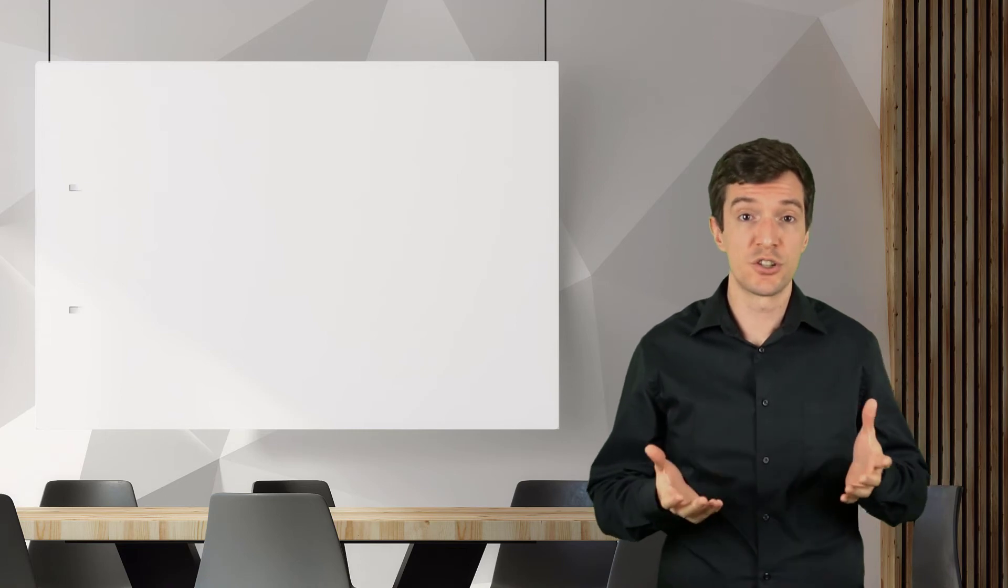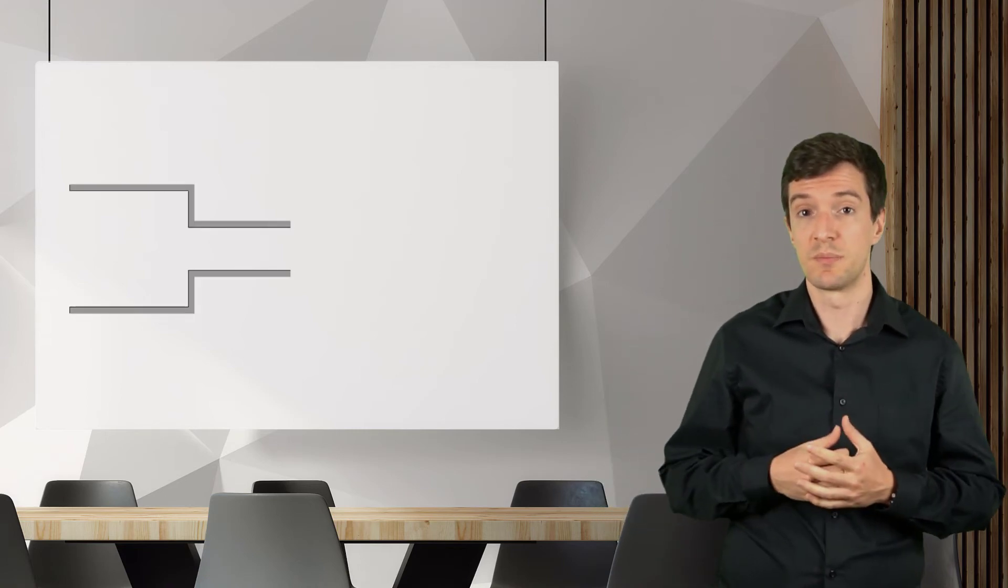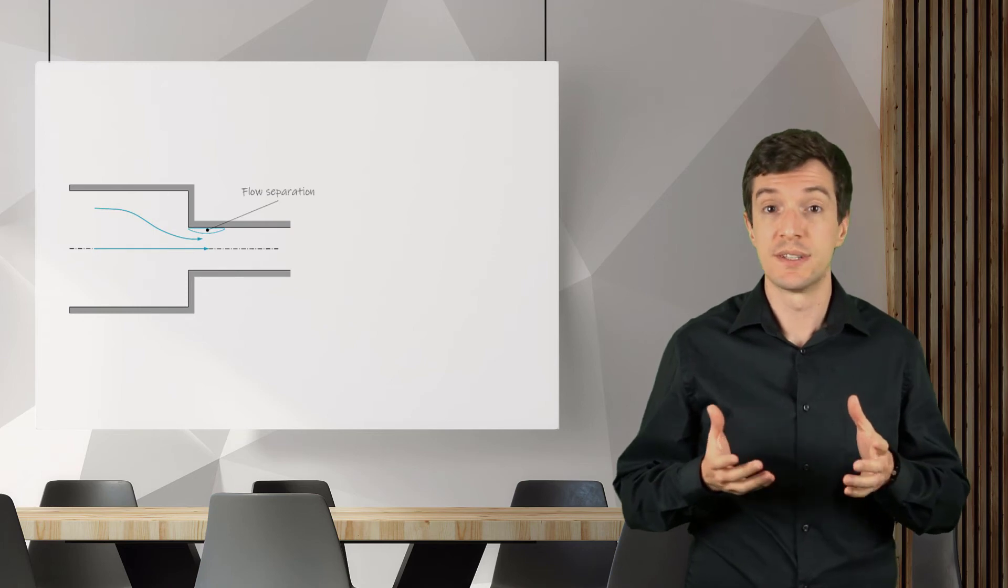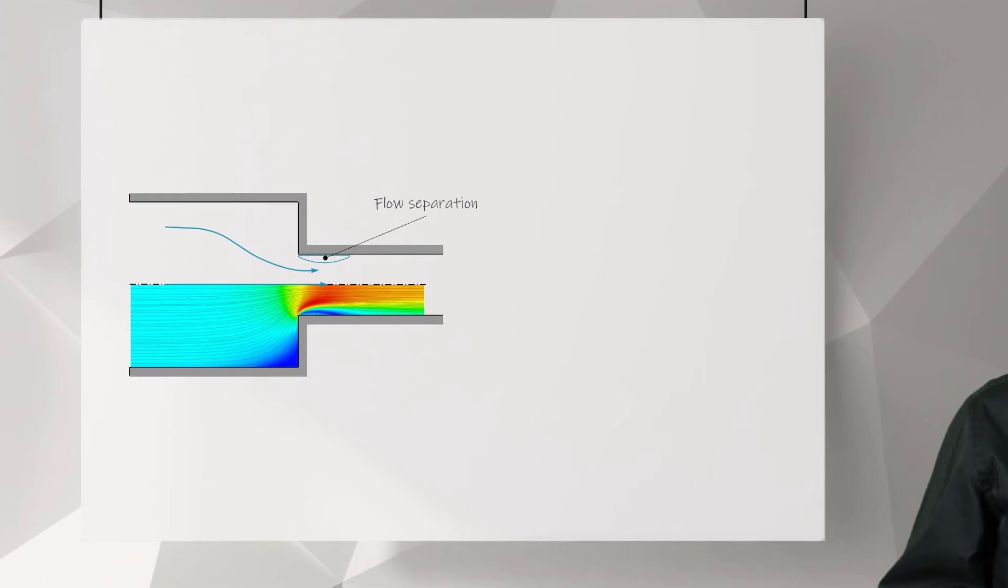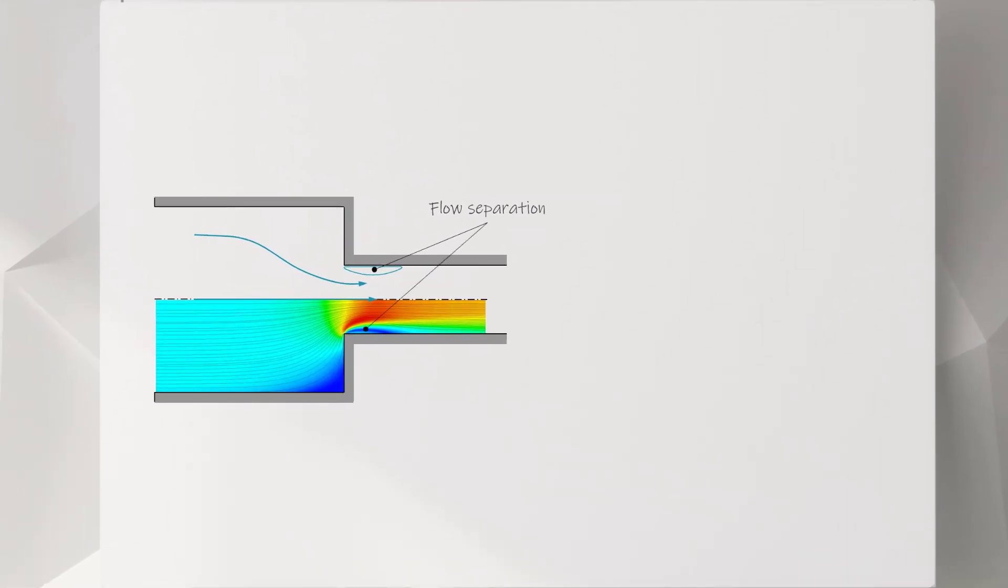Similar to the entrance region is the sudden contraction in pipes and channels. We often encounter this component when larger pipes are connected to smaller pipes. The contraction works in a similar way as the entrance region where we can have separated flow. The flow initially accelerates and then decelerates in the smaller pipe. The loss coefficient is related to the ratio of the cross sectional areas of the two pipes. The closer are the areas, the smaller the loss coefficient will be.